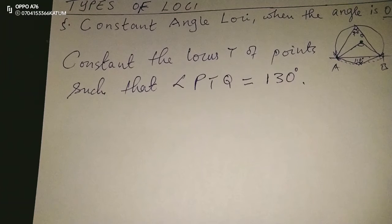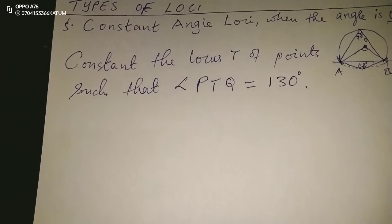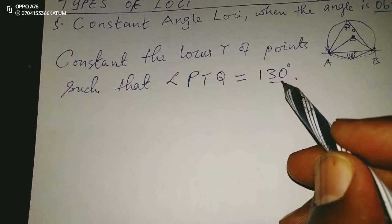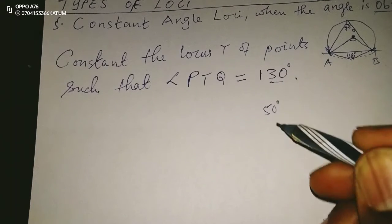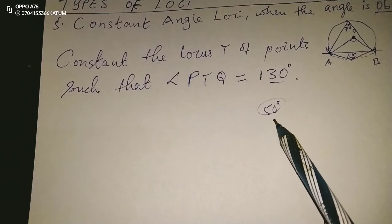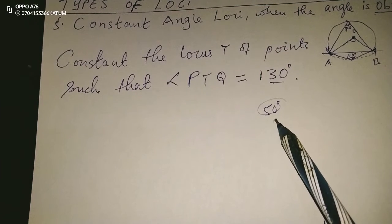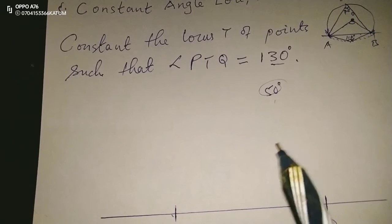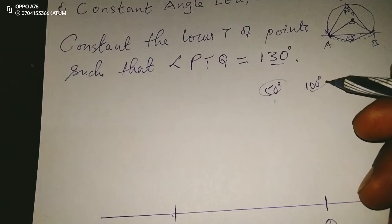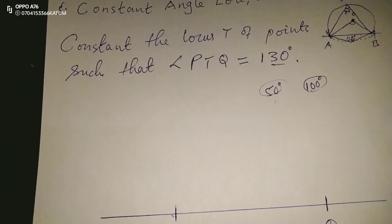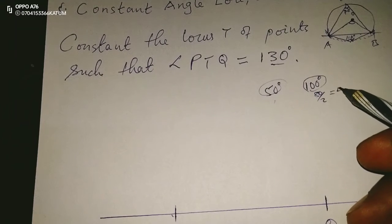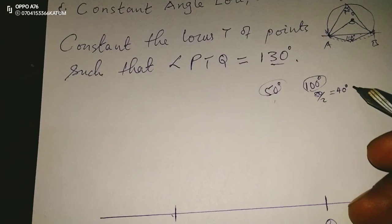Therefore we want to construct the locus T such that angle PTQ equals to 130. This means we need on the other side an angle of 50 degrees. To construct a constant angle loci of 50 degrees, we're going to need an angle at the center which is equal to 100 degrees. That means we will need base angles of 80 divided by 2, which gives us 40 degrees.